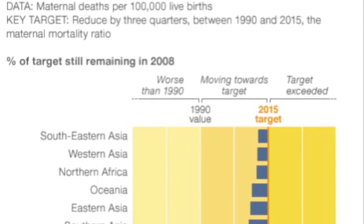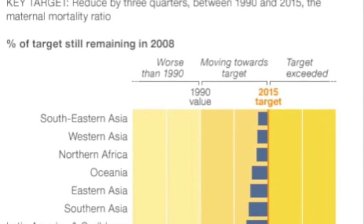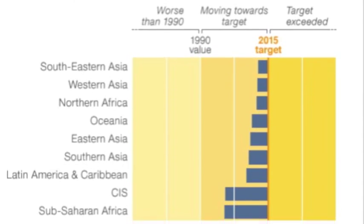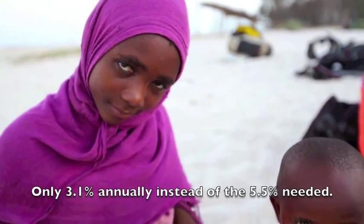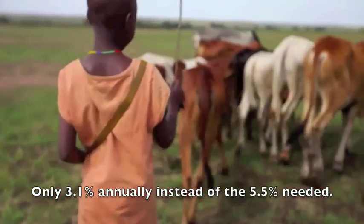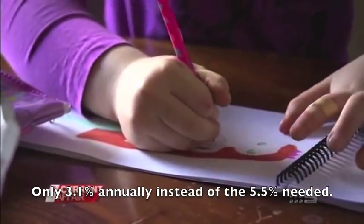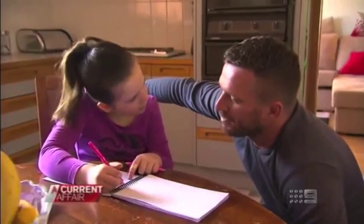The target of Millennium Development Goal 5 is to reduce the maternal mortality ratio from 1990 to 2015. So far, progress has been slow. Since 1990, the global maternal mortality ratio has declined by only 3.1% annually, instead of the 5.5% needed to achieve MDG-5.